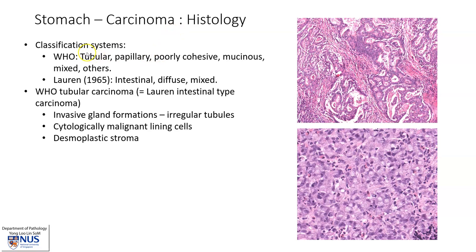On histology, there are several classification systems used for gastric carcinoma. Two of the best known are the WHO classification, which includes tubular, papillary, poorly cohesive, mucinous, mixed, and other types; and the Lauren 1965 system, which includes intestinal type, diffuse type, and mixed type. In the case we have just seen — poorly cohesive with signet ring morphology — this falls into the WHO poorly cohesive carcinoma and the Lauren diffuse type carcinoma.